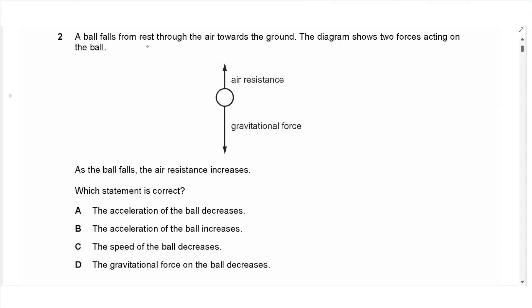Question 2: A ball falls from rest through the air towards the ground. The diagram shows two forces: air resistance and gravitational force. As the ball falls, air resistance increases because speed increases. The speed of the ball is not decreasing — we have a resultant force downwards since gravitational force is greater than air resistance, so speed is increasing. The gravitational force is not decreasing either — it stays constant as mg.